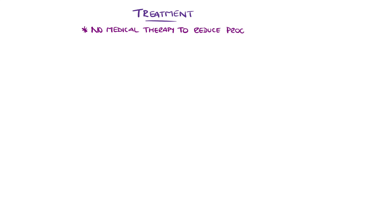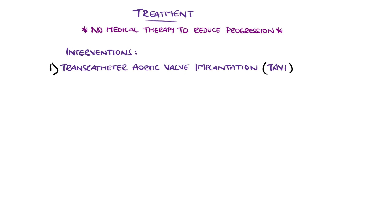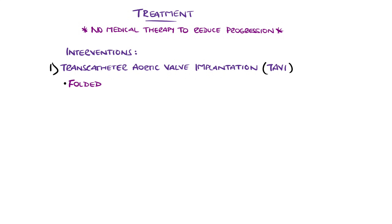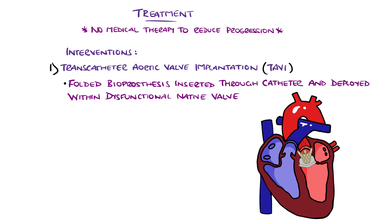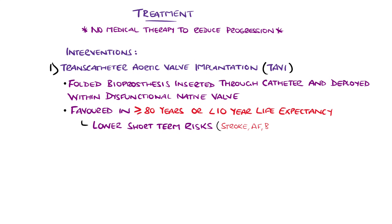Treatment is mostly through replacement of the aortic valve. There has not been evidence of a medical method to slow the progression of aortic stenosis, including statins. The two main interventions are transcatheter aortic valve implantation, known as TAVI, or surgical aortic valve replacement, SAVR. TAVI involves positioning a folded biological valve inside the site of the stenosed aortic valve via a catheter — for example via the femoral artery — and then deploying it once in position. This is generally the favoured option in those over 80 or with less than 10 years life expectancy, as there are fewer short-term risks like stroke, atrial fibrillation, or major bleeding.